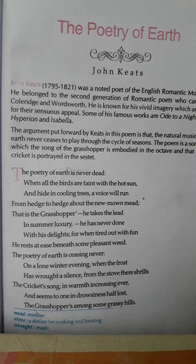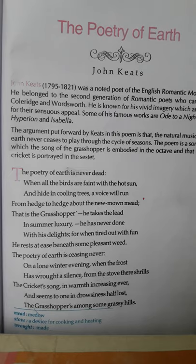John Keats is considered as one of the major poets of the second generation's English Romantic Age. He was born in 1795 in a lower middle class family in London, and in 1821, when he was just 25 years old, he died of tuberculosis.